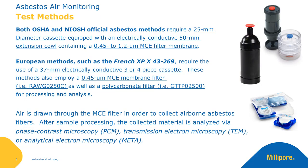Regulatory testing methods in the US and Europe have similar requirements with some key differences. Both the OSHA and NIOSH official asbestos methods require a 25 millimeter diameter cassette, along with an electrically conductive 50 millimeter extension cowl, which contains a 0.45 to 1.2 micron MCE filter membrane. European methods, such as the French XPX 43-269, require the use of a 37 millimeter electrically conductive 3 or 4 piece cassette.